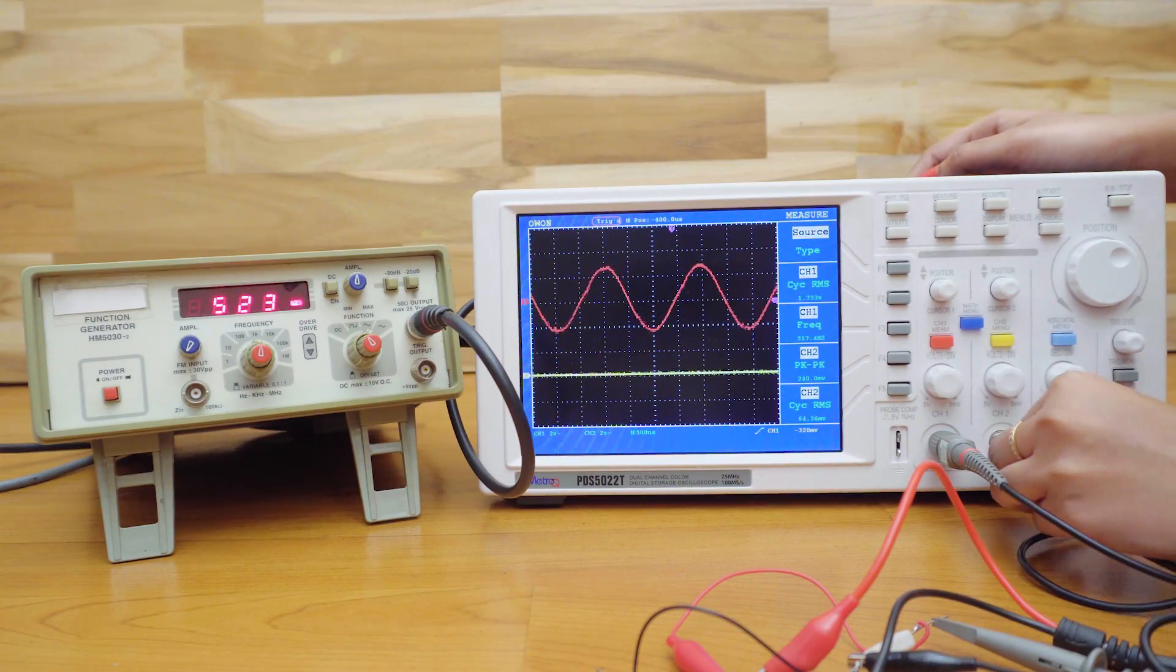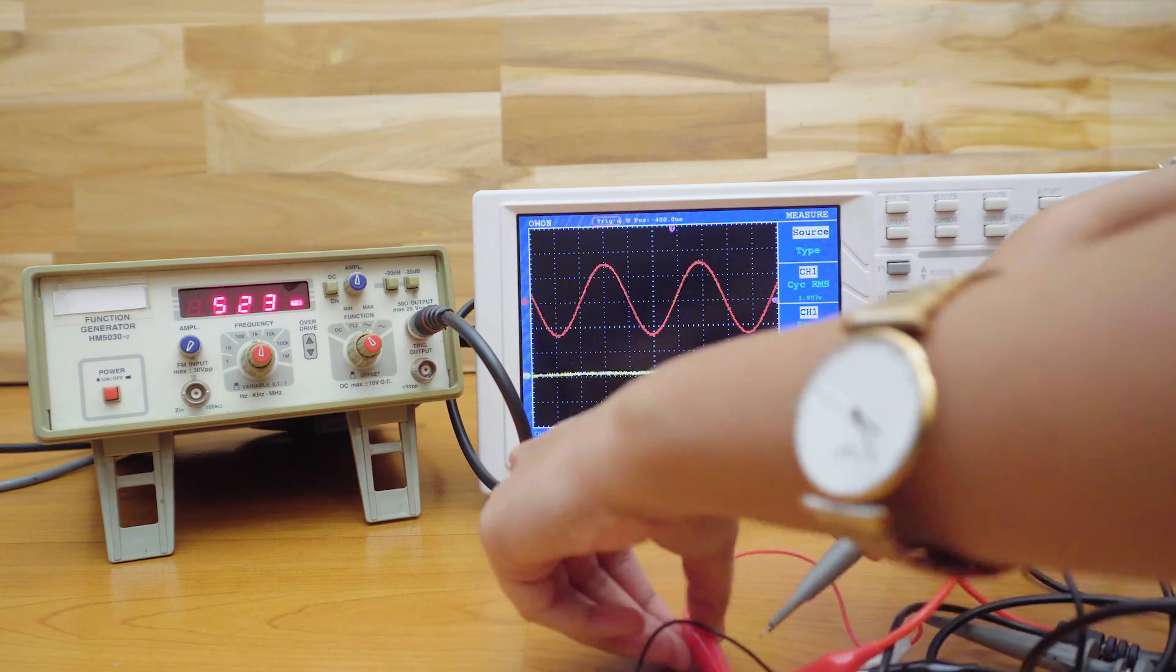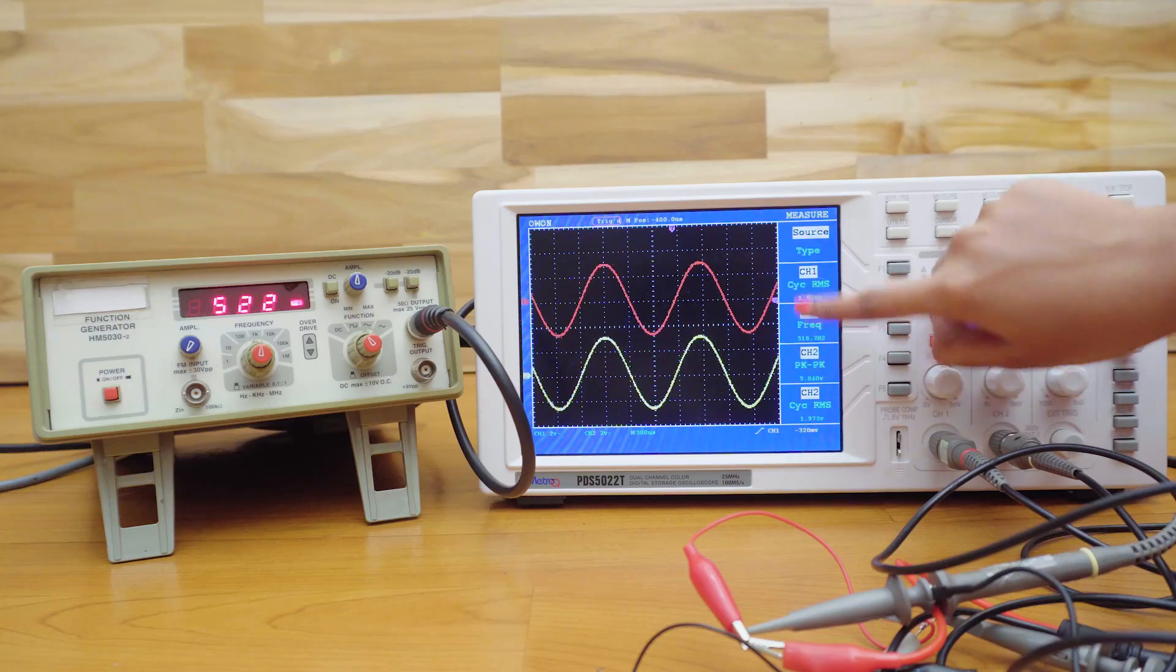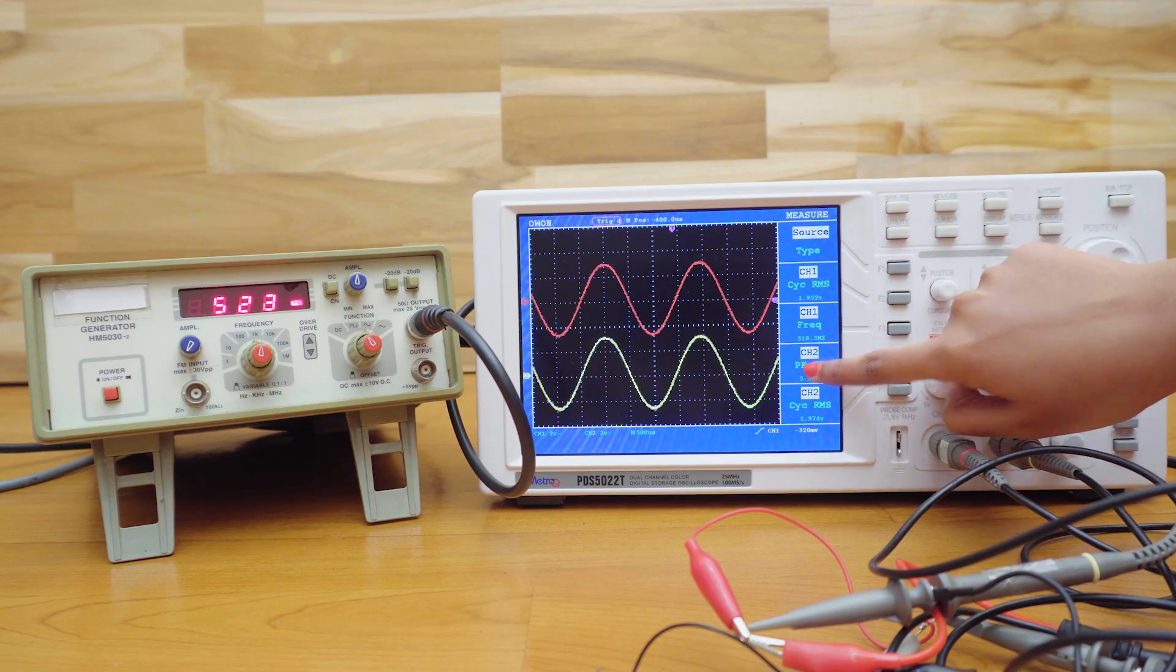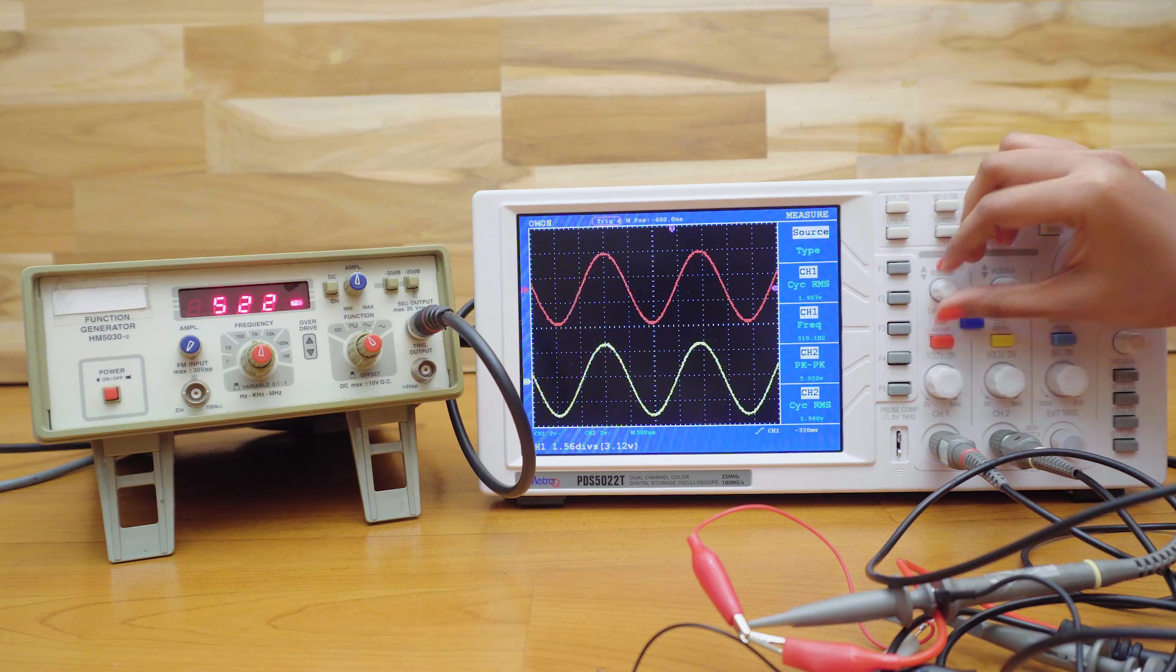I'm connecting the second probe to the channel 2 of the DSO. I'm giving the same input to the second channel. You can see that both the channels are displaying identical waveforms as the same signal is fed to them. We can even change the position of the signal using these controls.